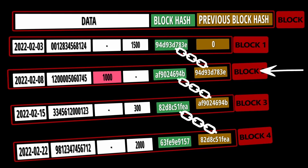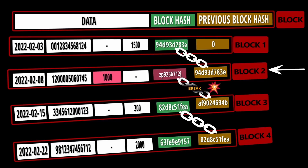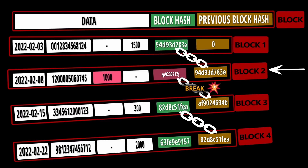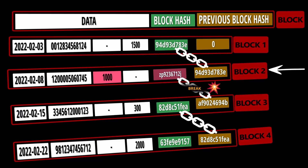Now, if the hacker changes the withdrawal amount from 400 to 1000, the data will change. Since the data changed, the hash of this block also changes. Because the hash of this block changed, the next block's previous block hash no longer matches, so the chain will break. Since the chain breaks, all the blocks beyond the second block will not be part of this blockchain. So it is very difficult for a hacker to hack a particular block, because all the blocks are linked to each other — unlike the previous case where all rows were independent of each other.